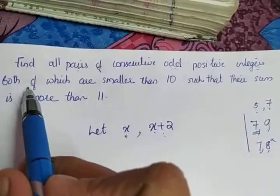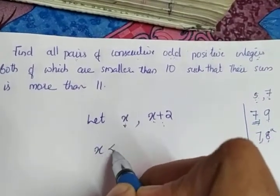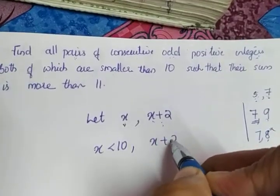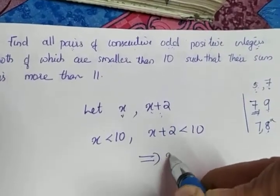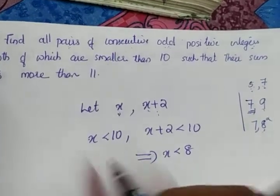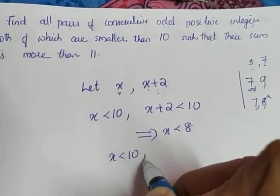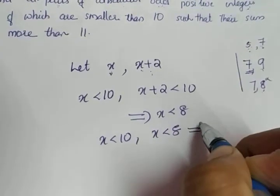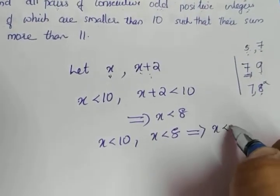The next condition is both are smaller than 10. That means X is less than 10 and X plus 2 is less than 10. X plus 2 less than 10 means X is less than 8. So we have the two conditions X less than 10 and X less than 8, and together they imply X less than 8.